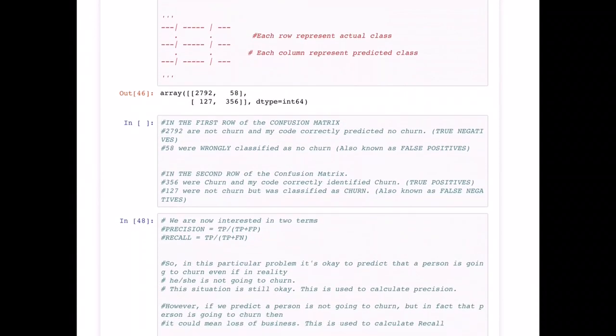We can see that in the first row of the confusion matrix, 2,792 values are not churned and my code was correctly able to predict no churn, also known as true negatives. 58 were wrongly classified as no churn, also known as false positives. In the second row, 356 were churned and my code correctly classified them as churned, called true positives. But 127 were not churned but were classified as churned, also known as false negatives.